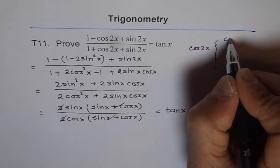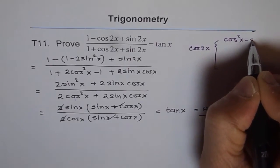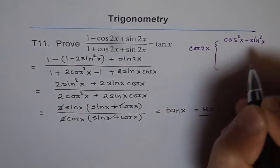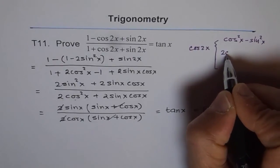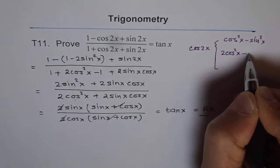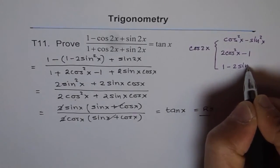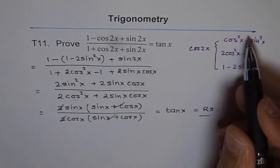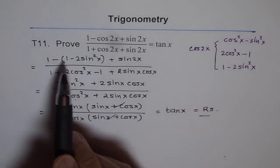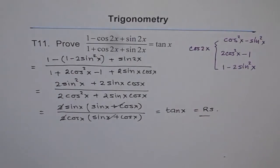One is cos square x minus sin square x. The other one is 2 cos square x minus 1. And the third is 1 minus 2 sin square x. Now, which one to use? That is very critical.